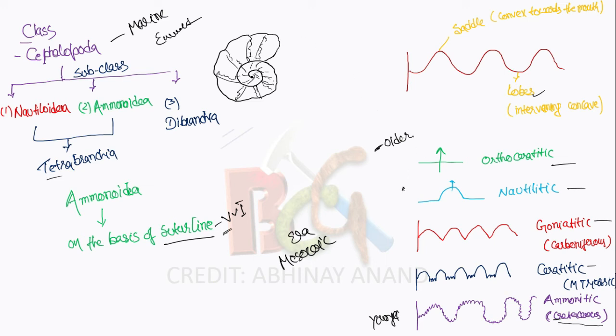When the evolution of ammonites started, the suture line changed. The complexity of the suture line increased. In the simple form, the convex part which opens toward the mouth is called a saddle, and the concave part or inward curve is called a loop. In the beginning, when it is goniatite form, the surface is simple. After that, it becomes more curved - this is called nautilitic.